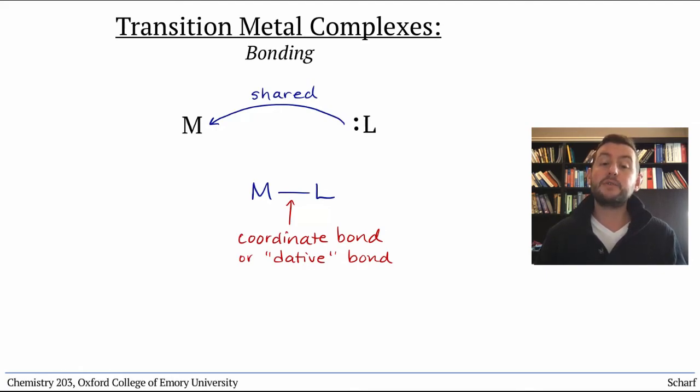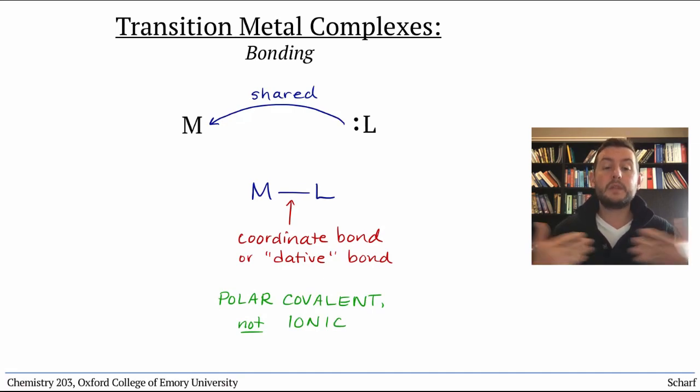As a result, these complexes are often referred to as coordination complexes. It's important to realize that these types of bonds are polar-covalent bonds, not truly ionic bonds. The electrons are truly shared between the metal and the ligand, even if they originally both came from the ligand.